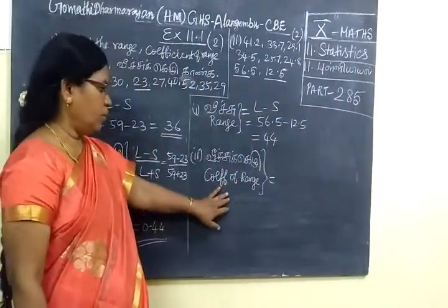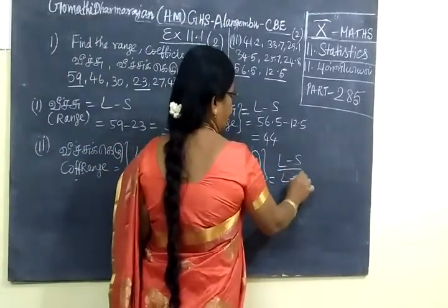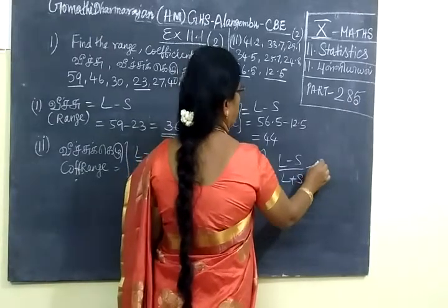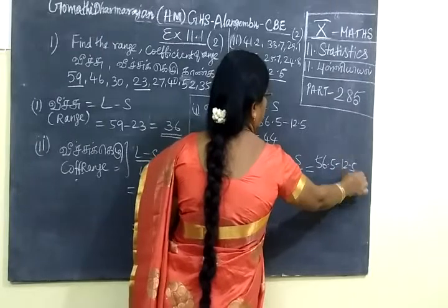Next, we find the coefficient of range. L minus S by L plus S. So, 56.5 minus 12.5.